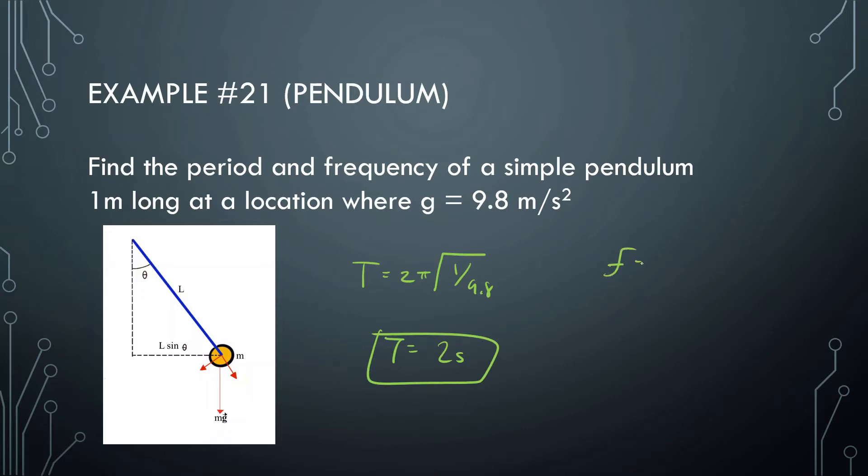We should know frequency is 1 over period, or in this case, frequency is 1 over 2, which is 0.5 hertz. So this is saying that every 2 seconds, this makes a full cycle.